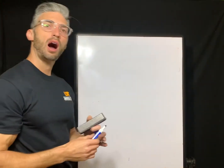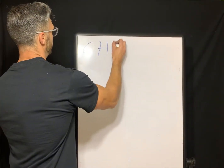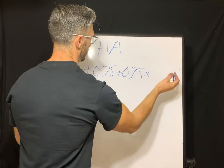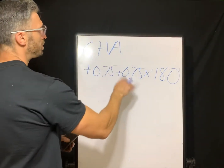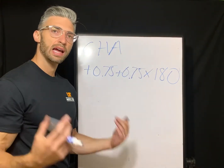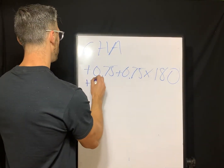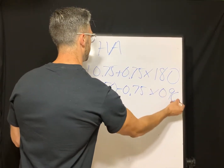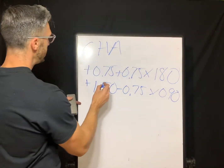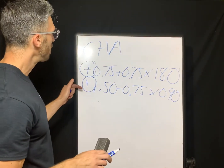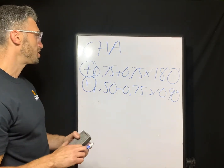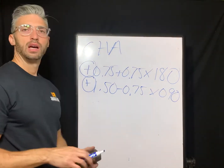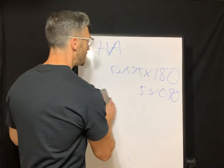Now compound hyperopic astigmatism — very simple if you think through the steps. Prescription: plus 0.75, plus 0.75, axis 180. Transposing: combine cylinder and sphere to get plus 1.50, minus 0.75, axis 90. To define this, look at the two sphere powers once transposed — both are plus, both hyperopic. In both the steepest and flattest meridian it's plus power, so this is compound hyperopic astigmatism.